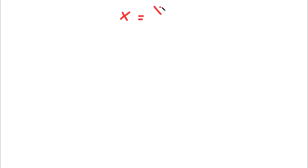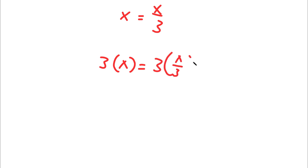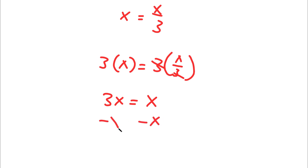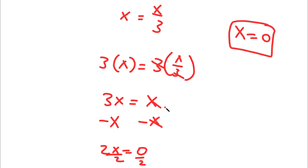Let me show a different method of solving this. Instead of subtracting x over 3 first, I'll start by multiplying both sides by 3. So I have 3x equals x. Then subtracting x on both sides, 3x minus x is 2x, so 2x equals 0, and dividing by 2 gives x equals 0. That's two ways of solving this problem.